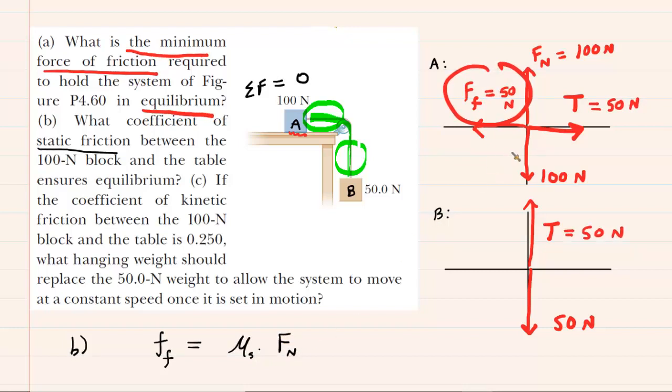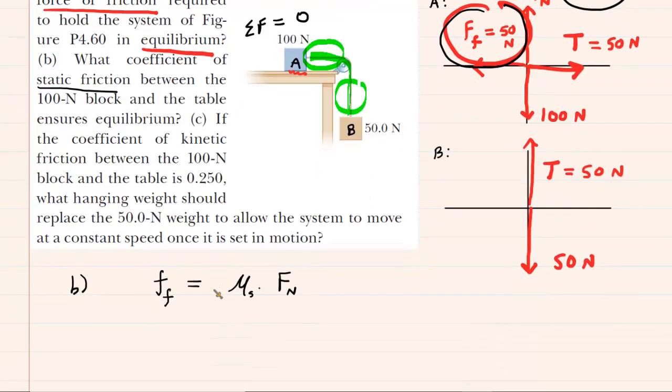Well, look back at the free-body diagram for block A. We know that the force of friction was 50 newtons and the normal force was 100 newtons. So we can plug those values into our equation.